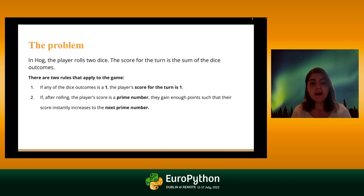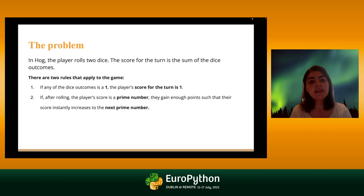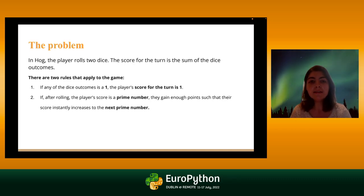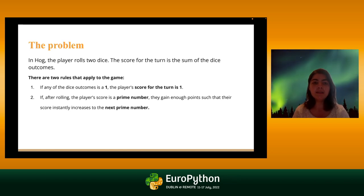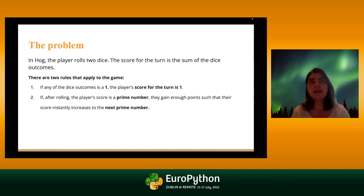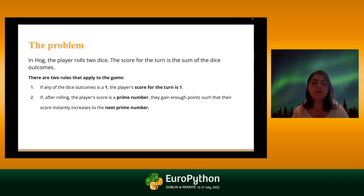The problem we're working with is a game called the Game of Hog. In the simplified version we'll use, there's one player who rolls two dice, and the score for the turn is the sum of the outcomes. For example, rolling two and three gives a total score of five. The first rule is: if any of the dice outcomes is one, then the total score for that turn is one — so rolling one and four gives a total of one, not five.